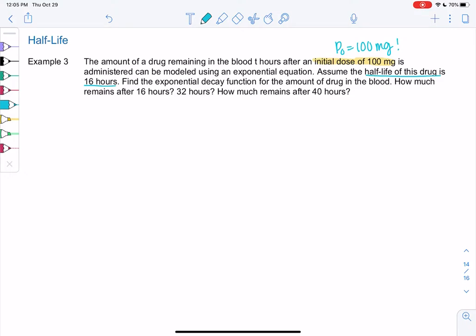So let's set up a table to understand how half-life works. So we have t and we have the amount of the drug. And we know at time 0, we have 100, because that's the initial dose. And so half-life, it sounds really scary, but all half-life tells me is that 16 hours later, it cuts in half. So what's half? 50.